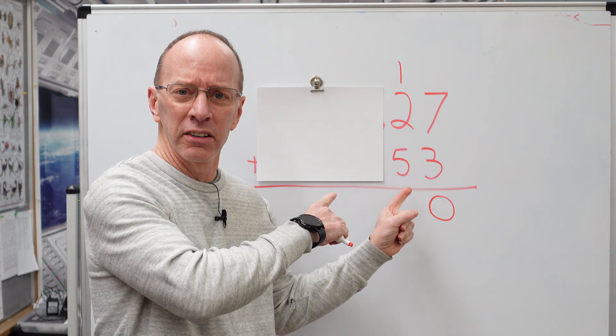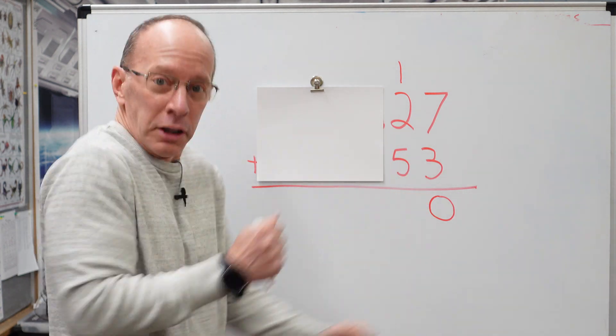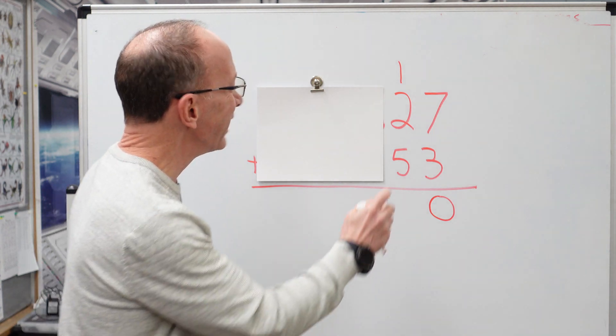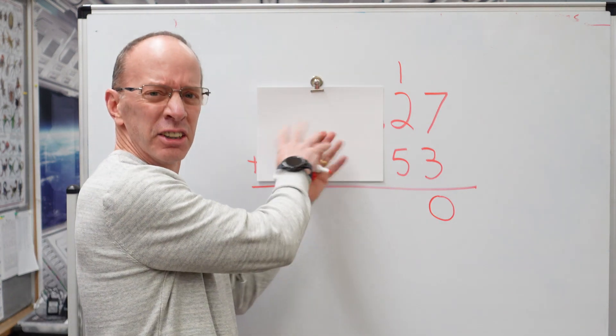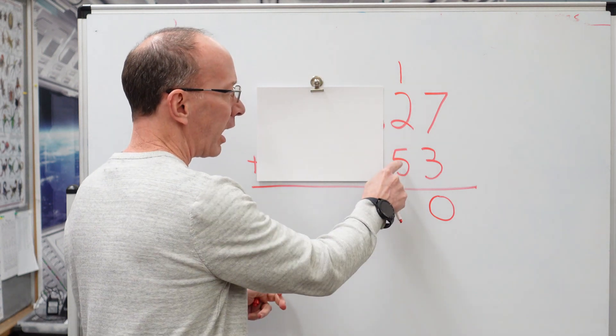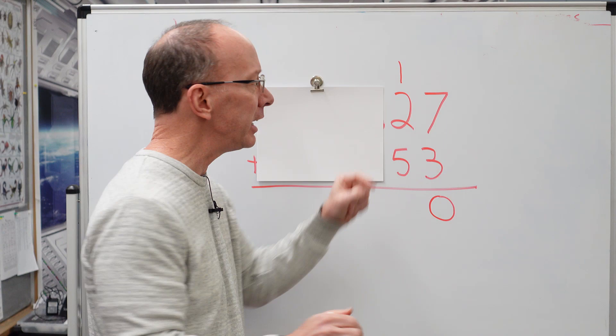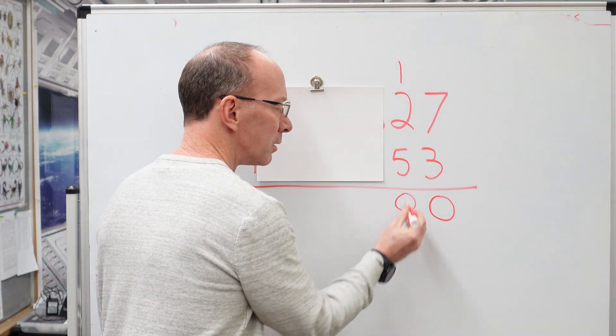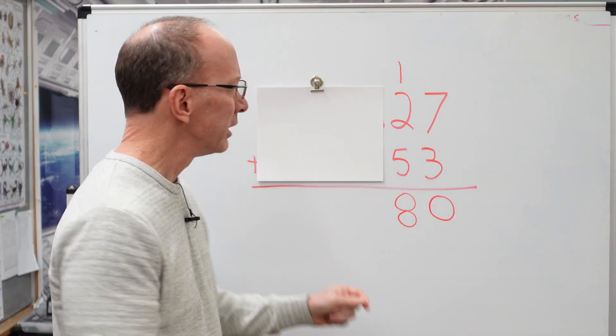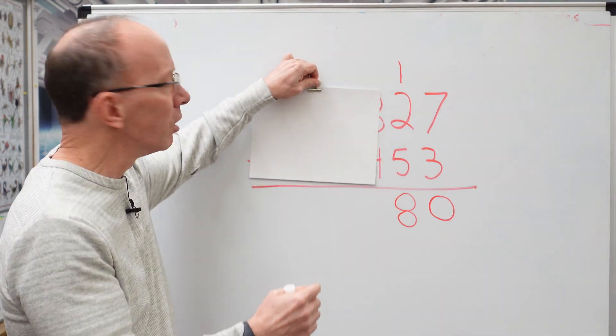Don't worry. We're going to take care of that in a little bit. So right now we're going to add the tens. Let's do it. Yeah. All right. See, it doesn't look confusing when you cover it up. So let's go ahead and add the tens. We got five, six, seven. Whoa, don't forget about that one there. Eight. We'll put the eight right here. Now I don't have to regroup anything, do I?